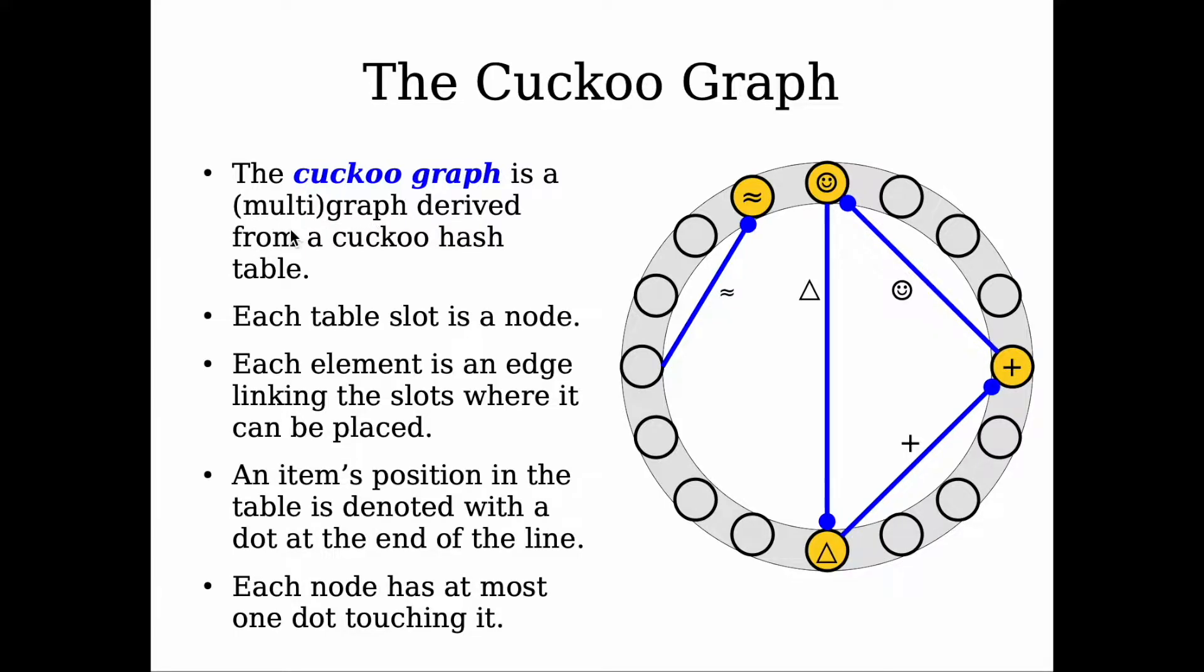If it's a multigraph, it is possible to have multiple edges that connect the same pair of vertices. So it is possible if we have two keys x and y with the same evaluation of h1 and hk. But we have a condition saying that h1 of x is not equal to h2 of x, so there cannot exist self-loops in the cuckoo graph.